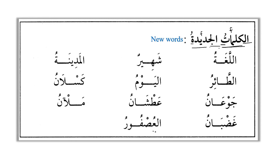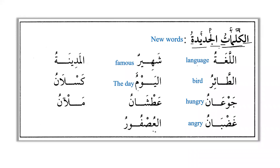They are equal in four properties: both are definite (with al), both feminine, both marfu', and both singular. The vocabulary list: al-lughatu means language, al-ta'iru means bird, jaw'anu means hungry, ghadbanu means angry, shahirun means famous. Al-yawmu means the day; with fatha, al-yawma means today; and yawmun means a day. 'Atshanu means thirsty, al-madinatu means city, kaslanu means lazy, mal'anu means full.